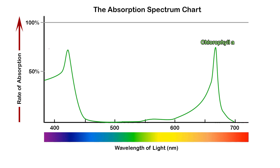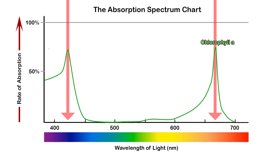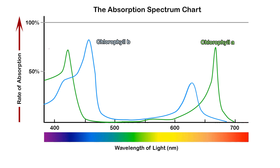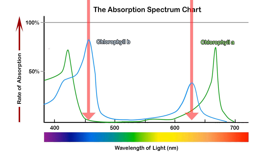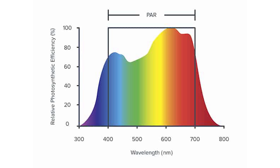Chlorophyll A absorbs blue best at around 430 nanometers and red at around 662 nanometers. Chlorophyll B absorbs blue around 453 nanometers and red around 642 nanometers. From the effective PAR rating chart, we see that green is also used in the middle of the spectrum. So what we want to know is how well a light fixture performs in all these areas.